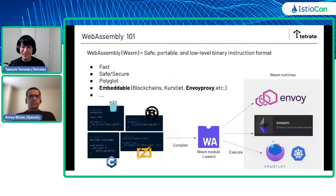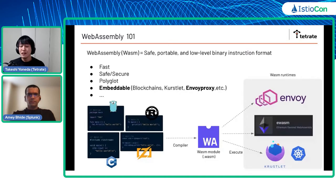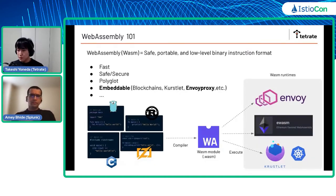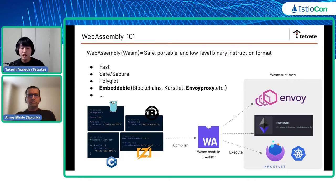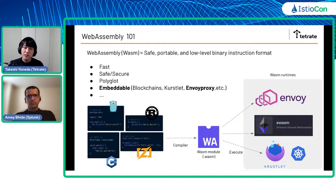The last characteristic, and again the most important for Envoy and Istio, is that WebAssembly is embeddable — meaning you can embed a WebAssembly virtual machine into your application. In this case we have Envoy and other things. You can embed the WebAssembly VM inside your application and then run user-provided WebAssembly modules inside of it. That is a notable feature of WebAssembly.